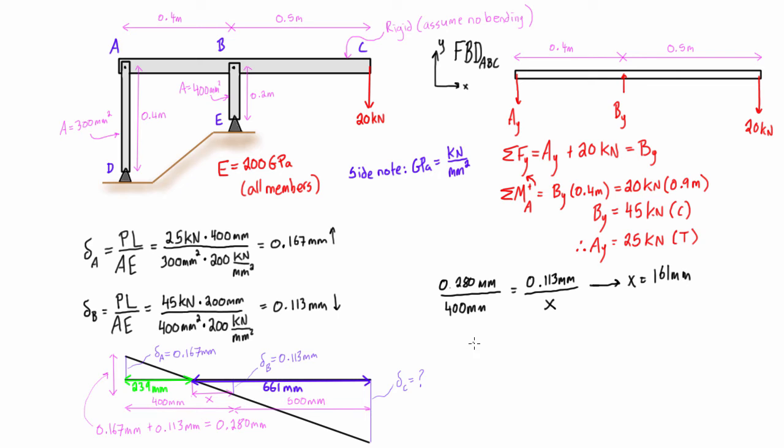So now we can do one more similar triangles calculation. We'll put the displacement at C over the base of this triangle, which is 661 millimeters.